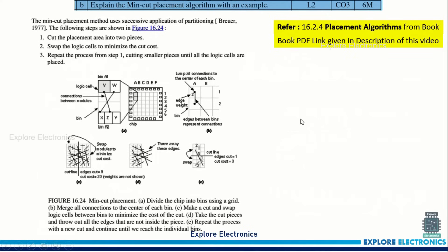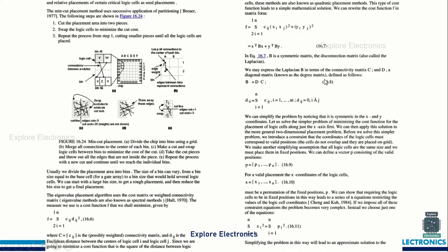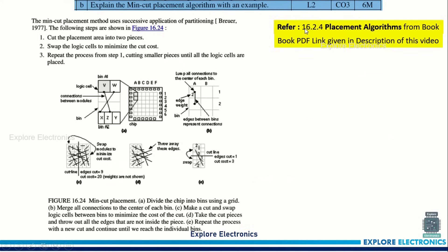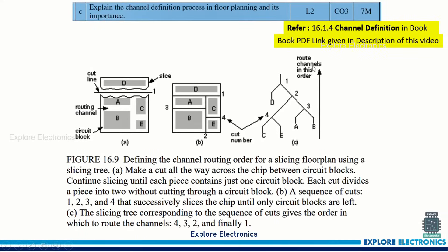The next question: explain the min-cut placement algorithm with an example. The min-cut algorithm needs to be explained with an example — please refer to the textbook whose link is given in the description. Take the same example and explain it clearly to get full marks. You can also go through section 16.2.4 of the textbook; the link is in the description.